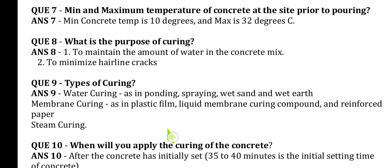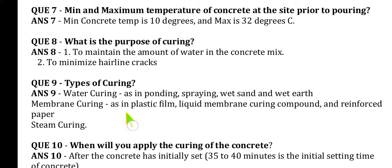Question 9: What are the types of curing? Water curing includes ponding method, spraying, wet sand, and wet earth. Ponding method is especially used for slab structures; spraying, wet water, and wet earth are used for retaining walls, columns, etc. Membrane curing includes plastic film, liquid membrane curing compound, and reinforced paper. There is also steam curing and chemical methods.